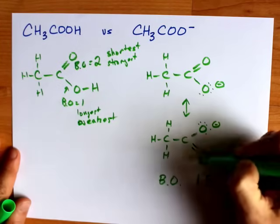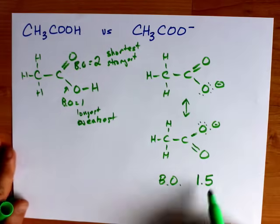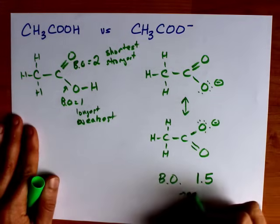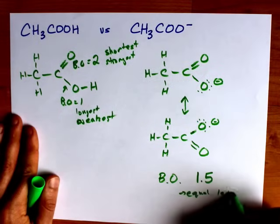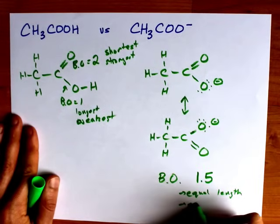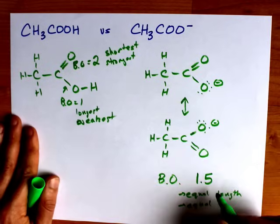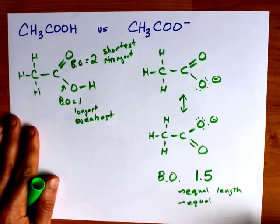Now, these two bonds, because they both have a bond order of 1.5, are equal length and equal strength, because they have the same bond order, and because it's carbon and oxygen in both cases.